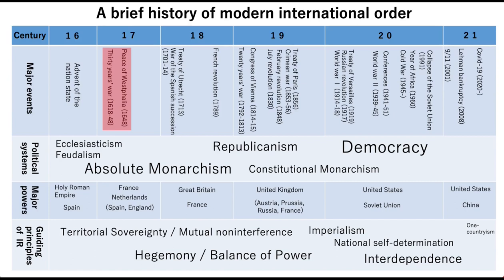The Peace of Westphalia brought forth a relatively stable period of peace in Europe. Although many small and not-so-small wars continued to occur, no major upheaval involving the whole of Europe took place until the French Revolution erupted in 1789. The French Revolution had a profound impact not just inside but also outside of France. It sent shockwaves throughout Europe, where the sudden surge of republicanism it represented was seen as a serious threat to monarchism — the foundation on which the Peace of Westphalia was constructed.